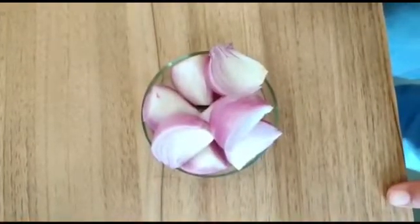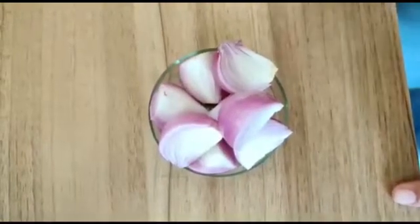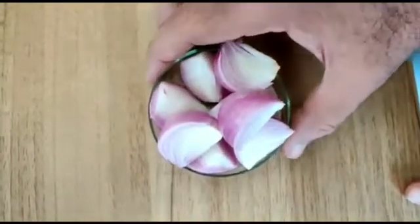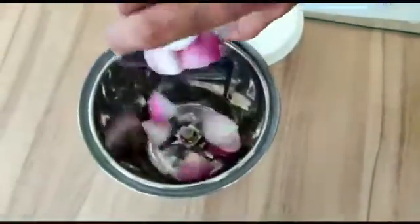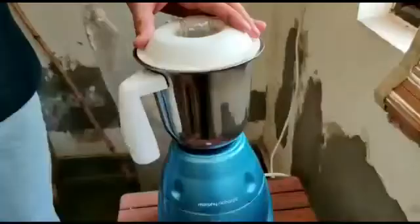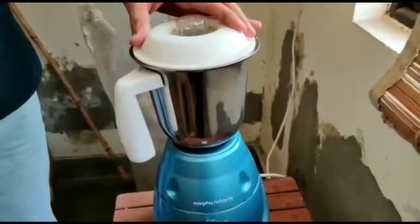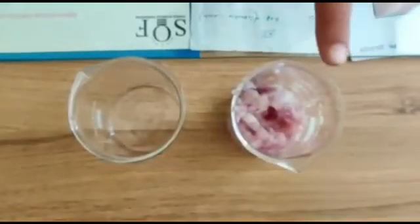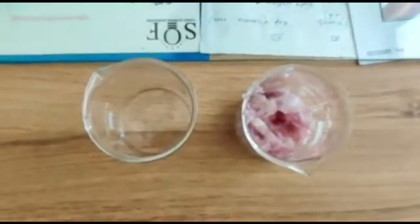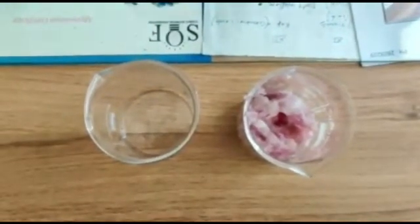First, we cut the pieces of onion and then put all these pieces in a grinder. We will grind these onion pieces. This is ground onion. This is another beaker in which we will prepare the extraction solution.